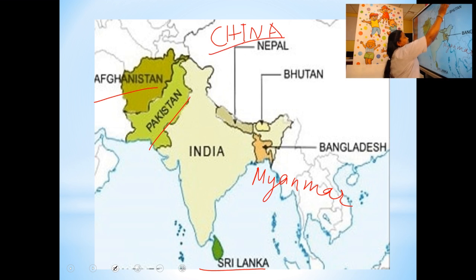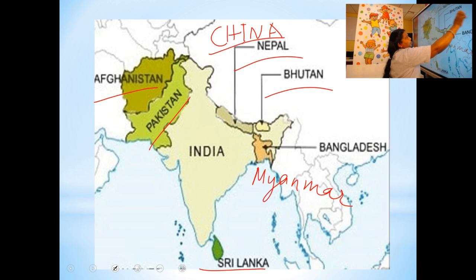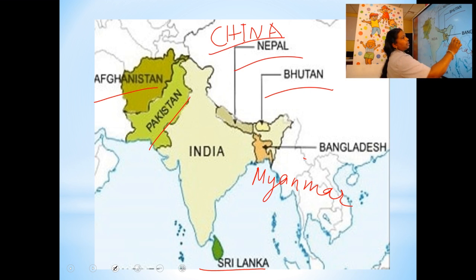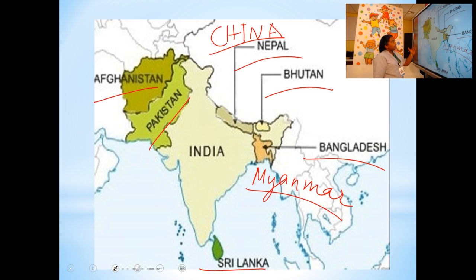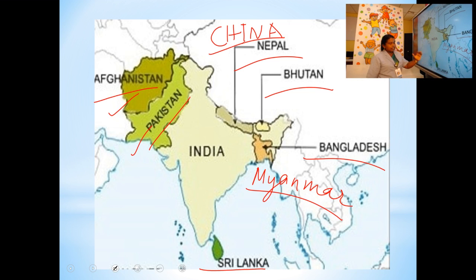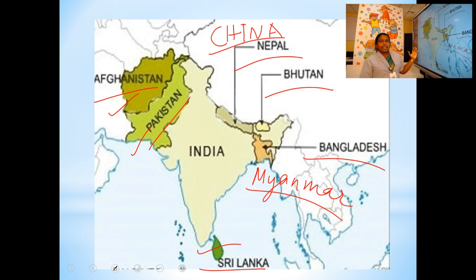So in the north: China, Nepal, and Bhutan. In the eastern part: Bangladesh and Myanmar. In the western part: Afghanistan and Pakistan. In the south: Sri Lanka. These are our neighboring countries.